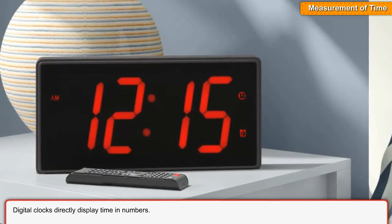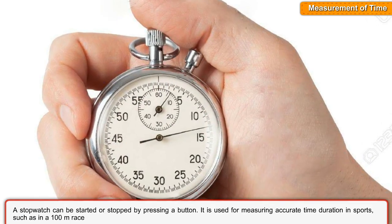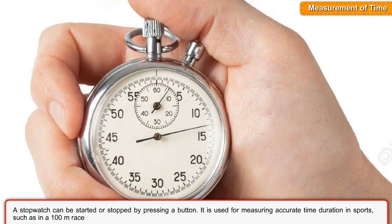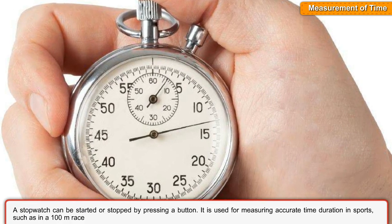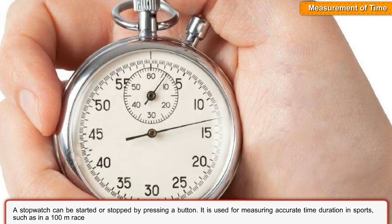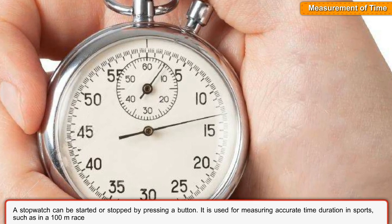Digital clocks directly display time in numbers. A stopwatch can be started or stopped by pressing a button. It is used for measuring accurate time duration in sports, such as in a 100-meter race.